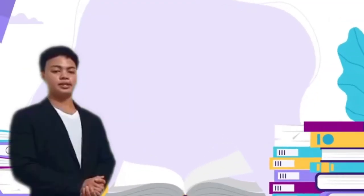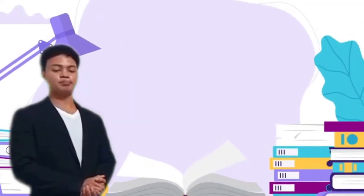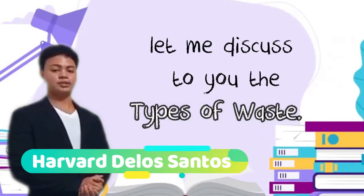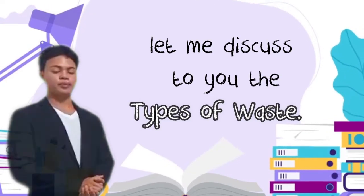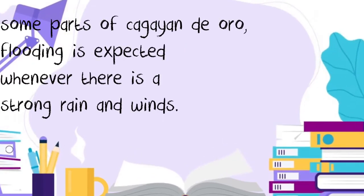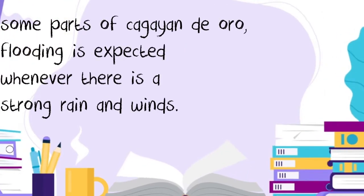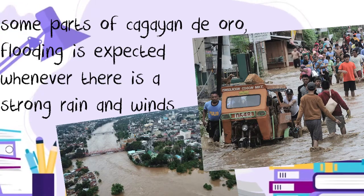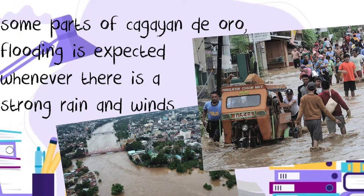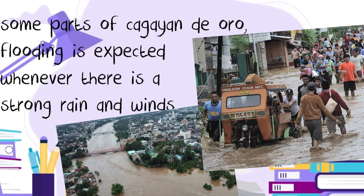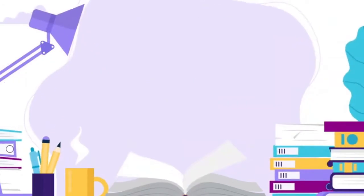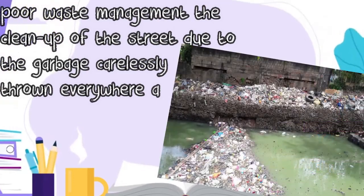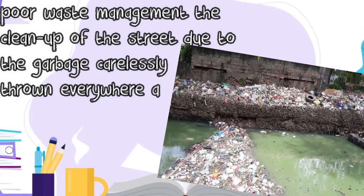I see that you have at least an idea about our lesson for today. I'm Harvard DeLessantos and let me discuss the types of waste. In some parts of Cagayan de Oro, flooding is expected whenever there are strong rain and winds. The aftermath of the flooding will have exposed another problem — poor waste management — with cleanup needed in the streets due to garbage carelessly thrown anywhere.